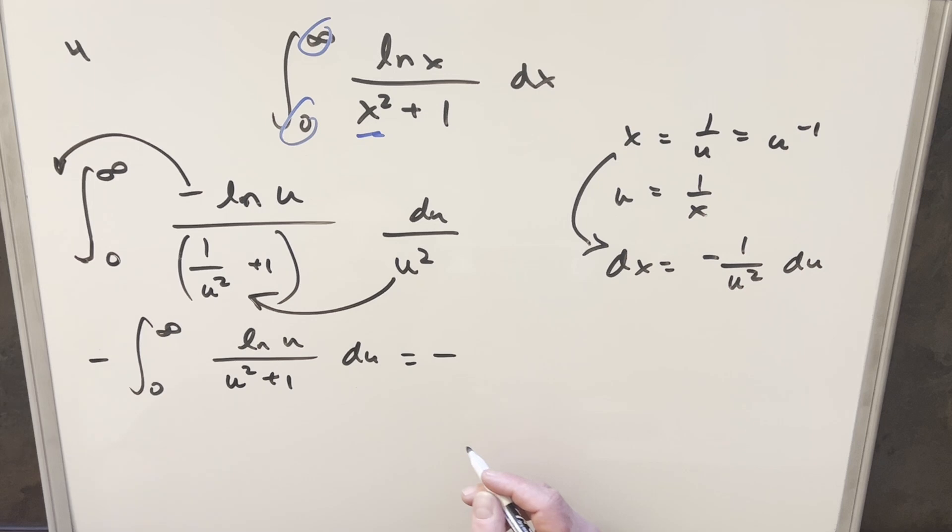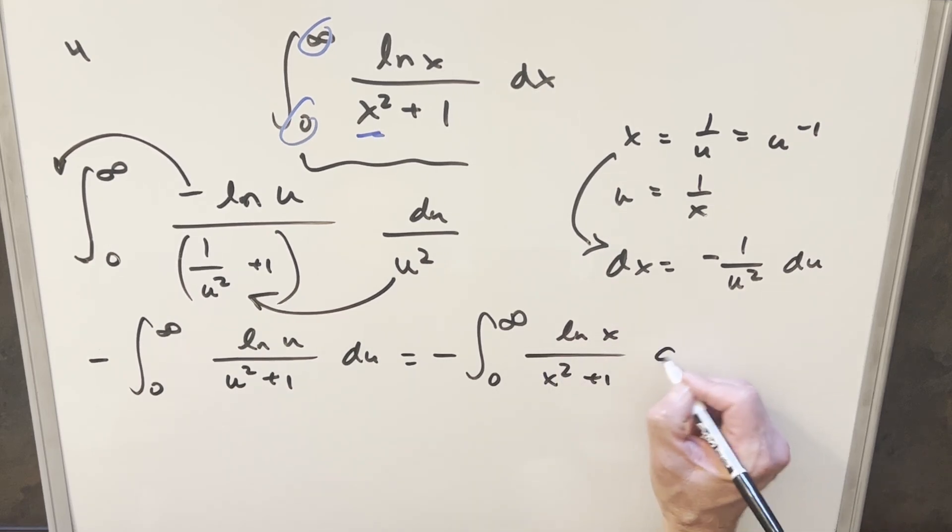But then let's just do a quick variable change on this. With a definite integral, I can change it back to x just because I'm going to want to compare to this original thing. So let's do that really quick. We'll have this back ln x over x squared plus one dx.